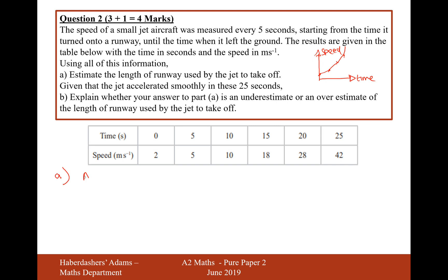the trapezium rule is area equals h divided by 2, open brackets, y0 plus yn plus 2 times the sum of all the other y values.